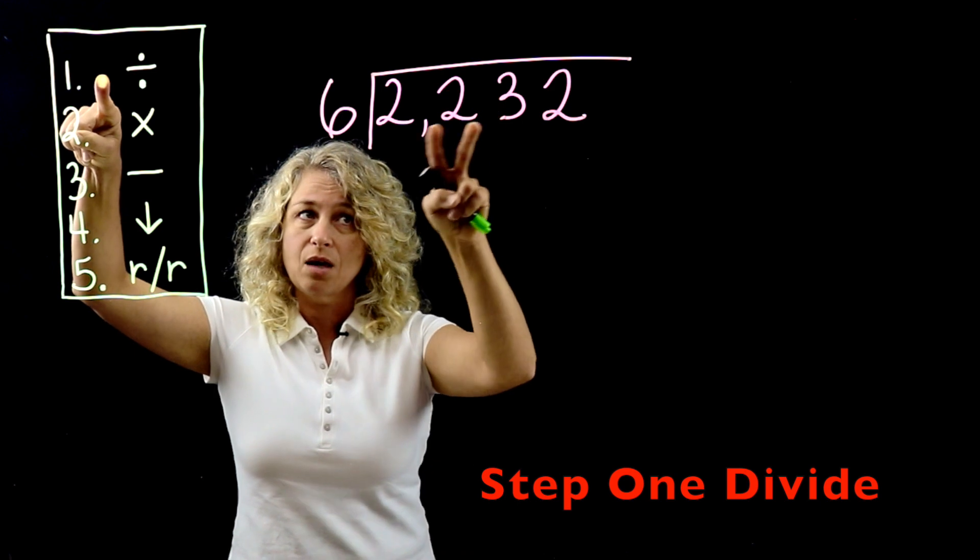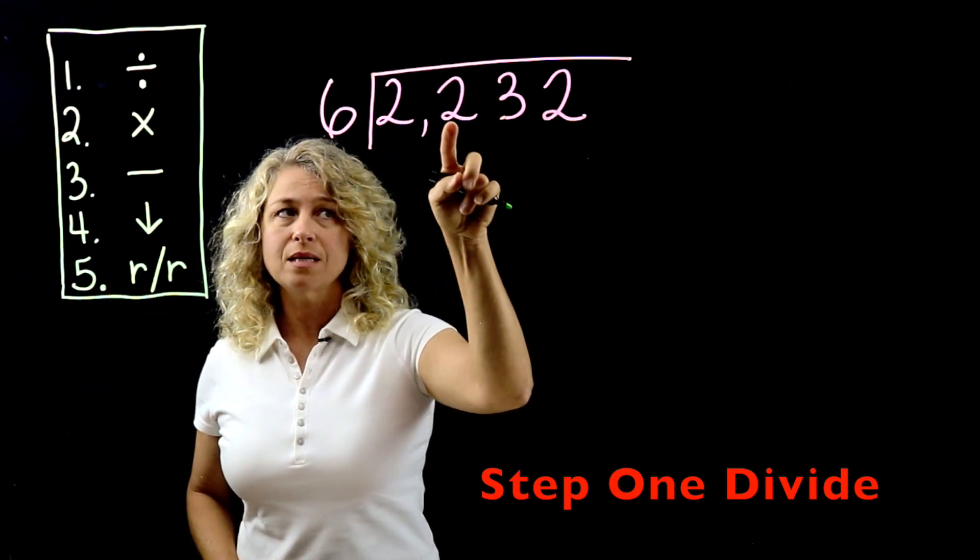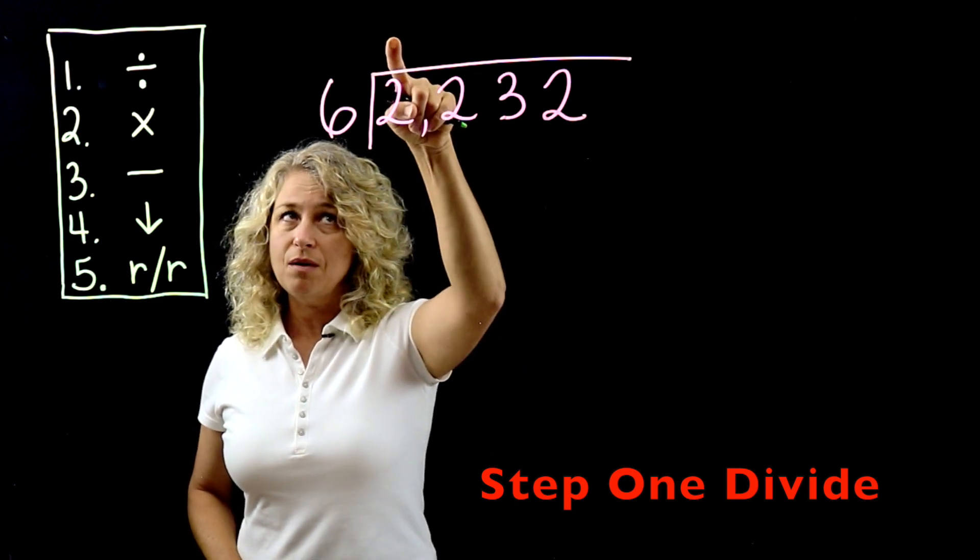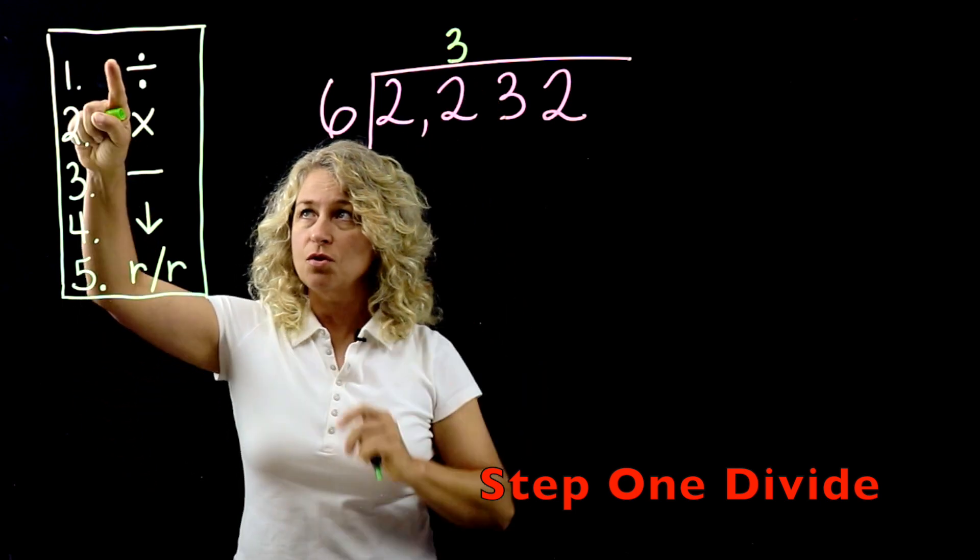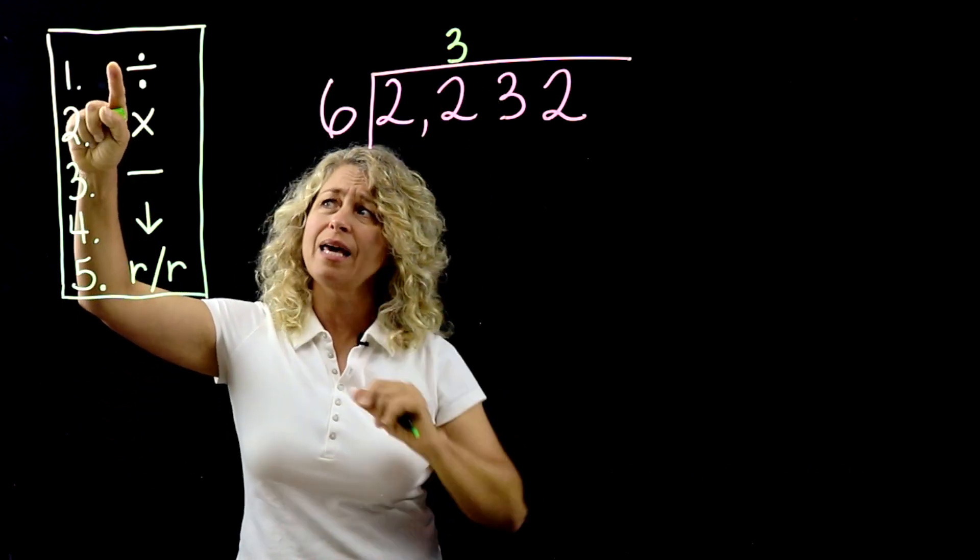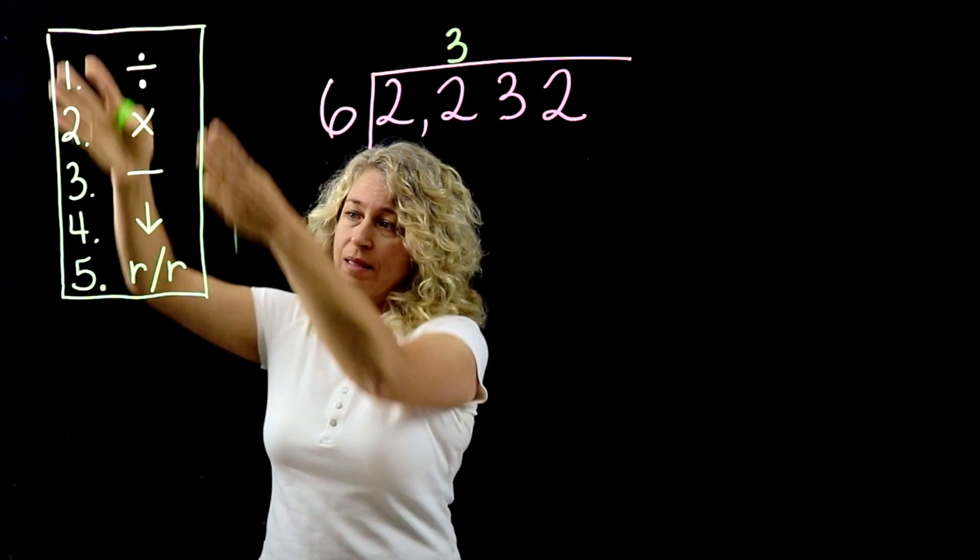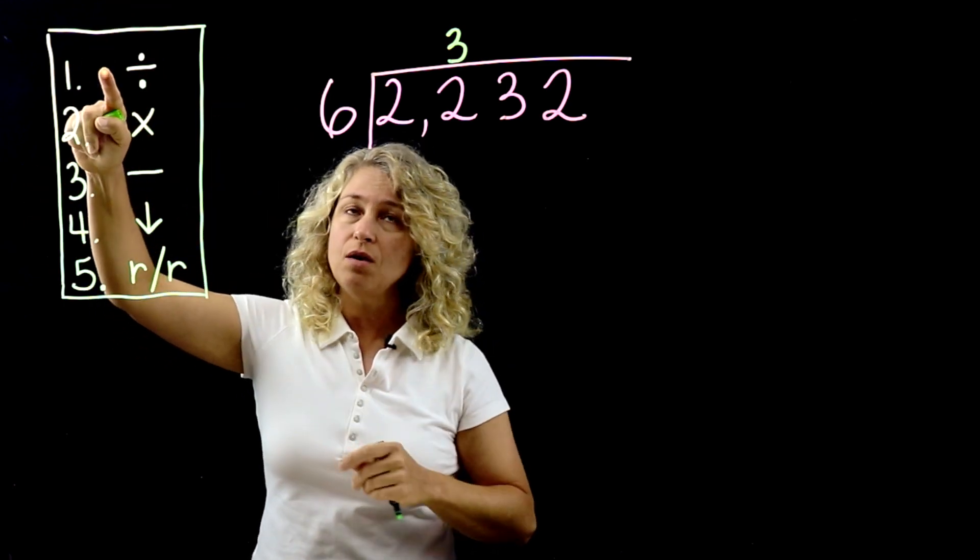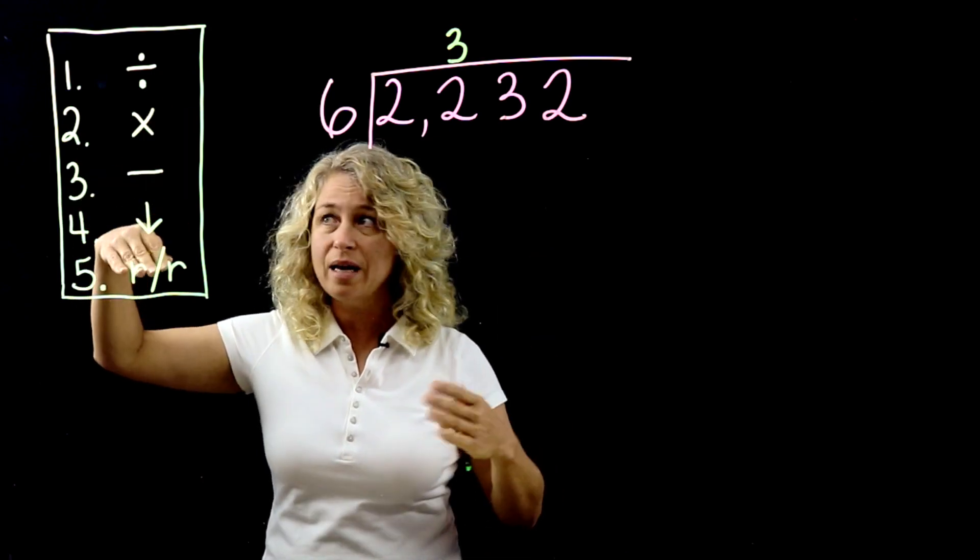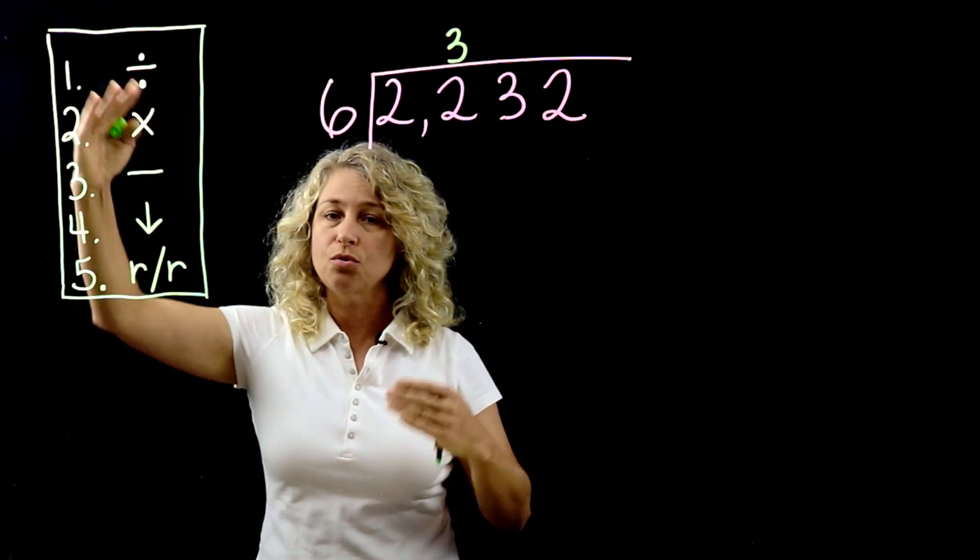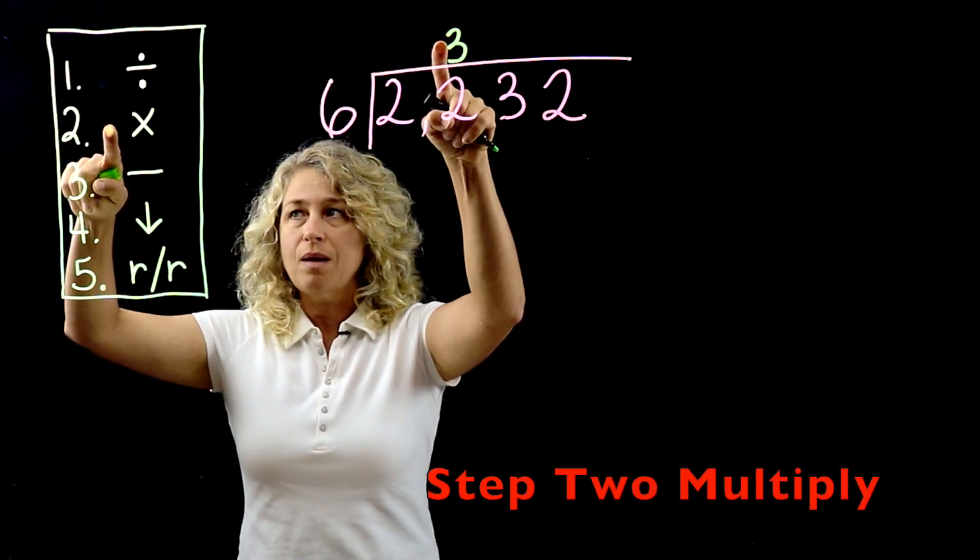So put your 3, and you're putting it always above the number you're dividing by. Don't put it above this 2, put it above this 2. All right, so that's our first step. And I like at the beginning, if you're doing this at home, write this on your paper and put your finger on the step that you're using. It's kind of like training wheels. Once you get good at it, you won't need this anymore, but when you're learning you need to follow these steps.